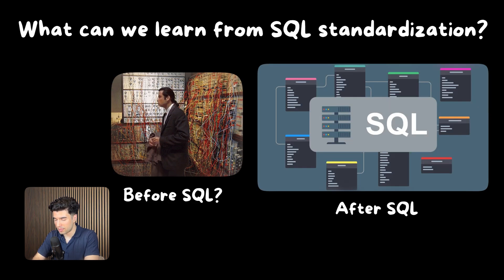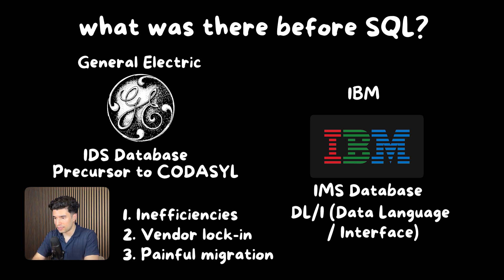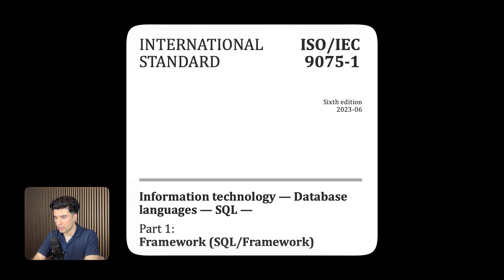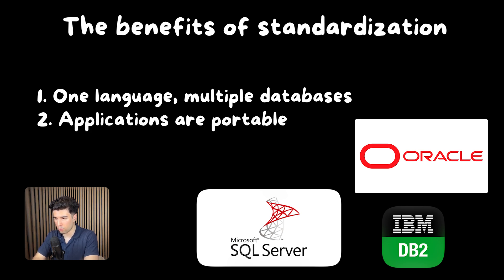The network effect of MCP reminds me of what happened with SQL and databases. Back in the day, every database vendor had their own proprietary query language. But this fragmentation created massive inefficiencies, vendor lock-in, and painful migration processes. So the industry converged on SQL as a standard and the results were transformative. Once SQL became the standard, you could learn one language and work with any database, your applications became portable between vendors, and a massive ecosystem of tools emerged around the standard.